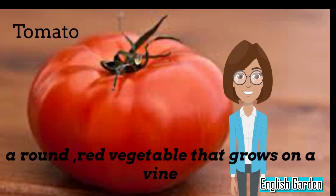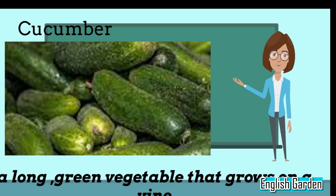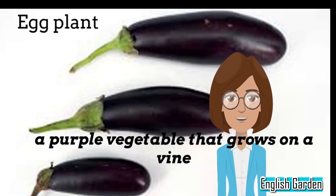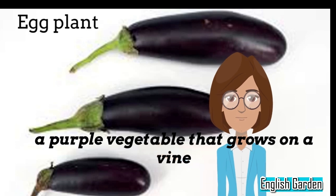Tomato, a round, red vegetable that grows on a vine. Cucumber, a long, green vegetable that grows on a vine. Eggplant, a purple vegetable that grows on a vine.